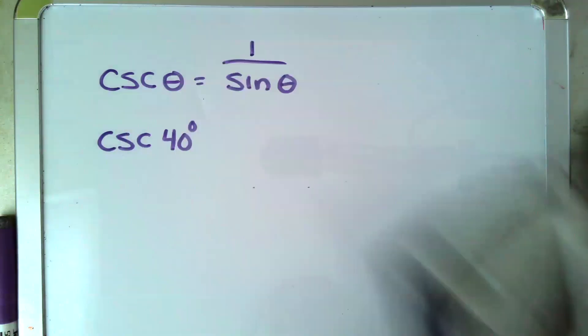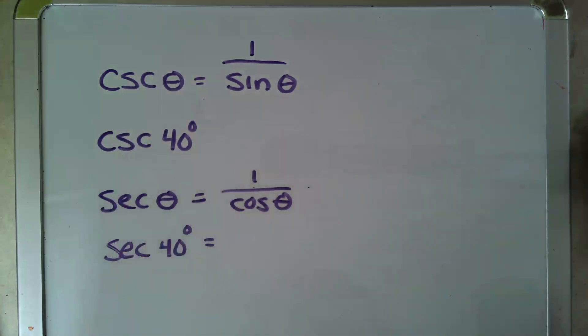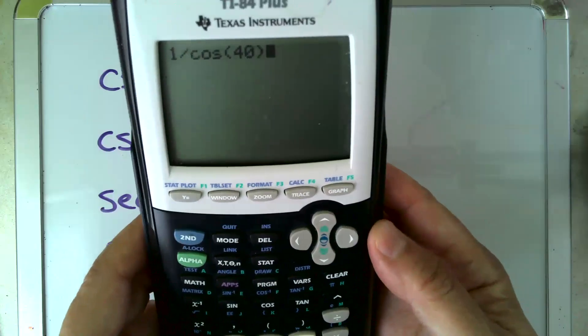Okay, let's take a look for the others. So secant is defined as 1 over cosine, so secant of 40 would be found by, that's right, 1 divided by the cosine of 40. Boom.